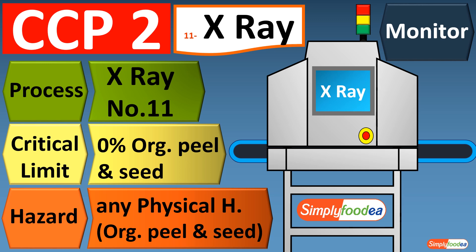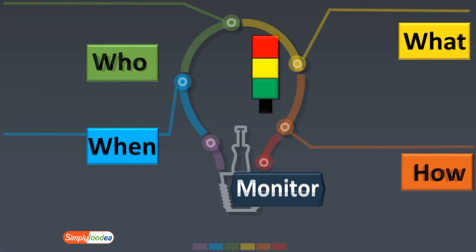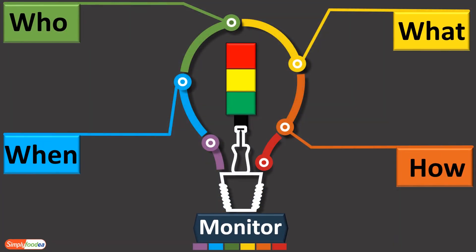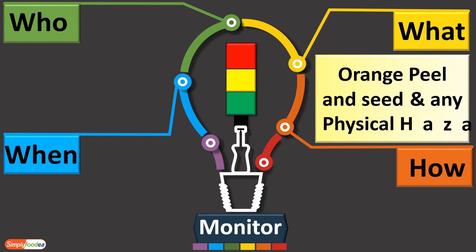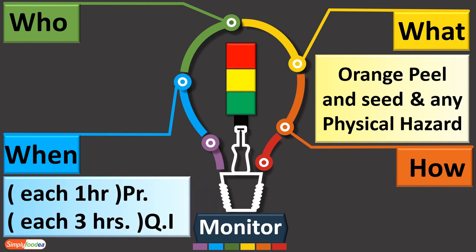The hazards of concern in the X-ray are any physical hazards — sand, any metal during the process, any plastic, and also orange peel and seed in the flow diagram. For the monitoring, the four main questions as learned from previous videos: what, when, how, and who. What I will monitor: the orange peel and seed and any physical hazard during the process.